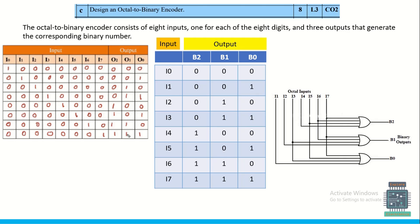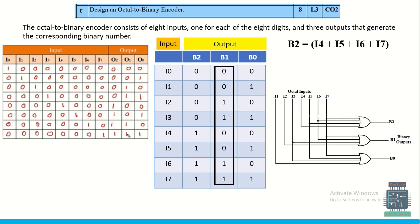To design an octal-to-binary encoder: it has eight inputs and three outputs, because octal means eight, and three bits are needed to represent eight values in binary. Inputs are I0 to I7, and only one input is high at a time. When I0=1, output is 000; when I7=1, output is 111. Using this truth table, expressions for B2, B1, and B0 are derived and implemented using OR gates.